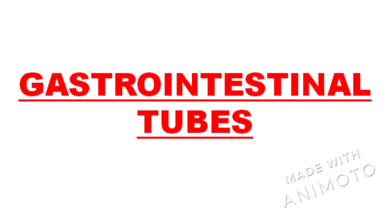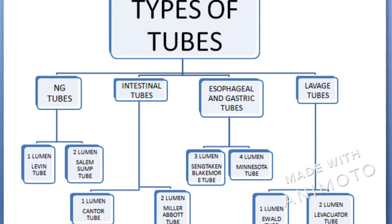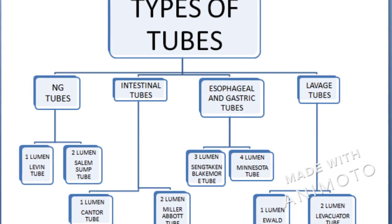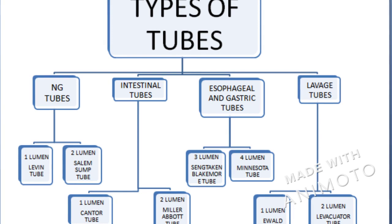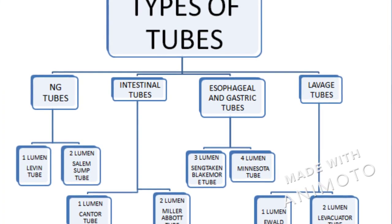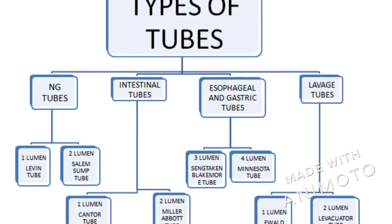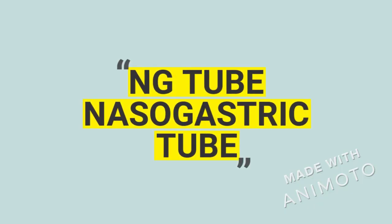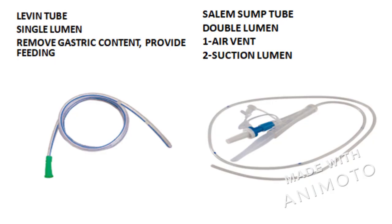Hi everyone, today we are going to read about the gastrointestinal tubes. There are four types of tubes which we are going to learn today: first is the NG tube, that is nasogastric tube; second, intestinal tube; third, esophageal and gastric tubes; and fourth, lavage tubes. First we will see about the nasogastric tube.